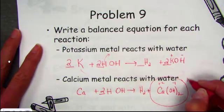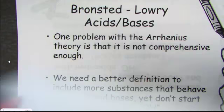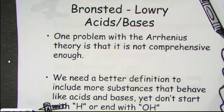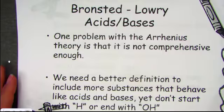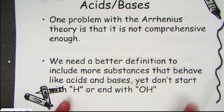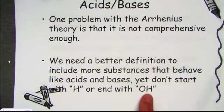The Arrhenius definition is probably the most common definition chemists use, going back to elementary school when you first learned about properties of acids and bases — H for acids and OH for bases. The problem is that there are substances that do everything an acid is supposed to do but don't start with H, and substances that do everything a base should do but don't end with OH. It's just not comprehensive enough to include all compounds that behave as an acid or a base.